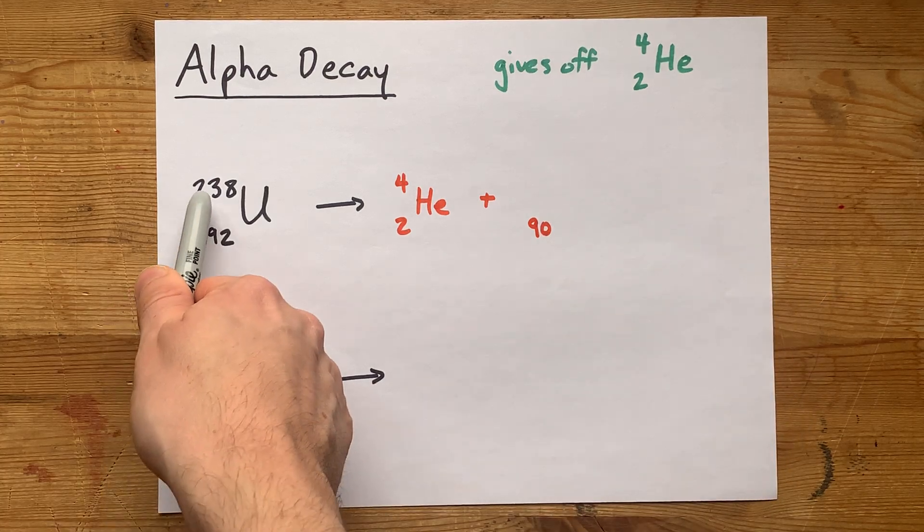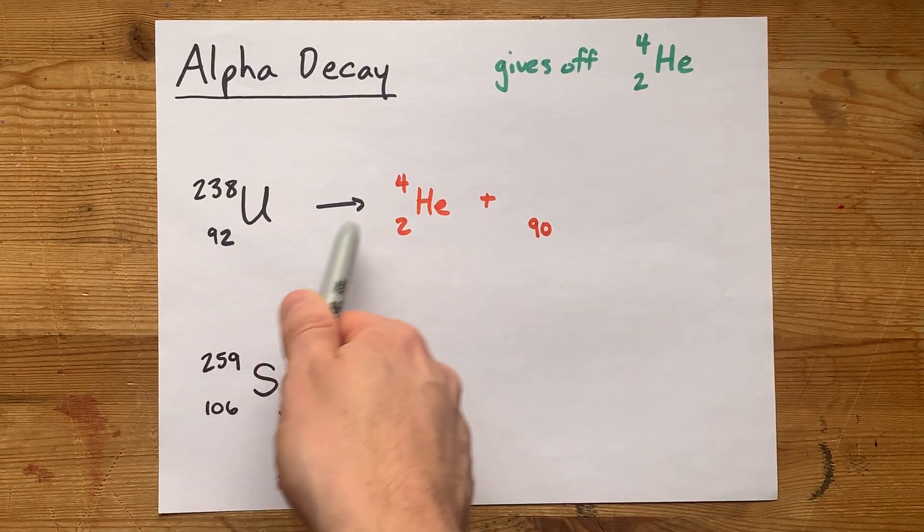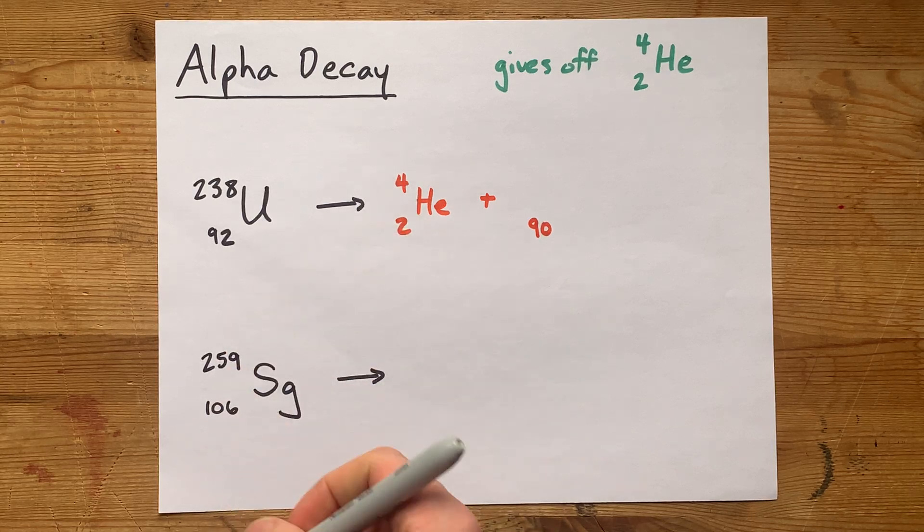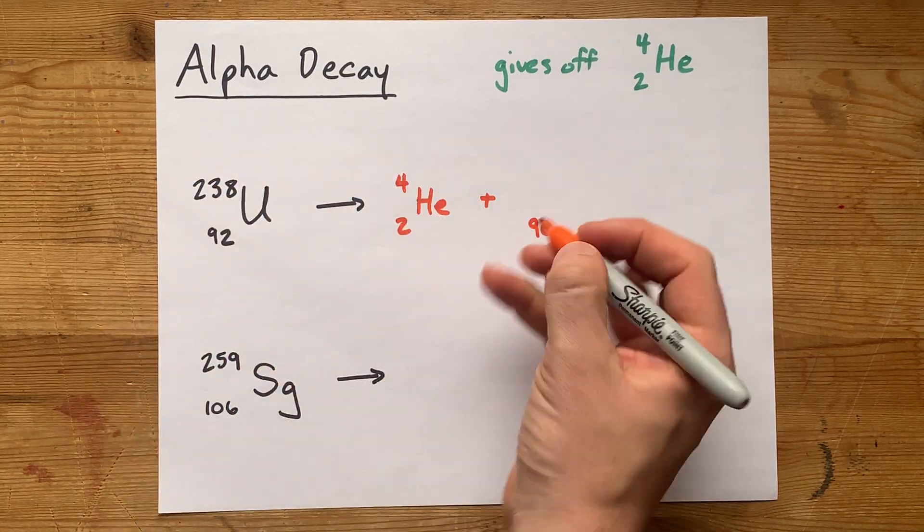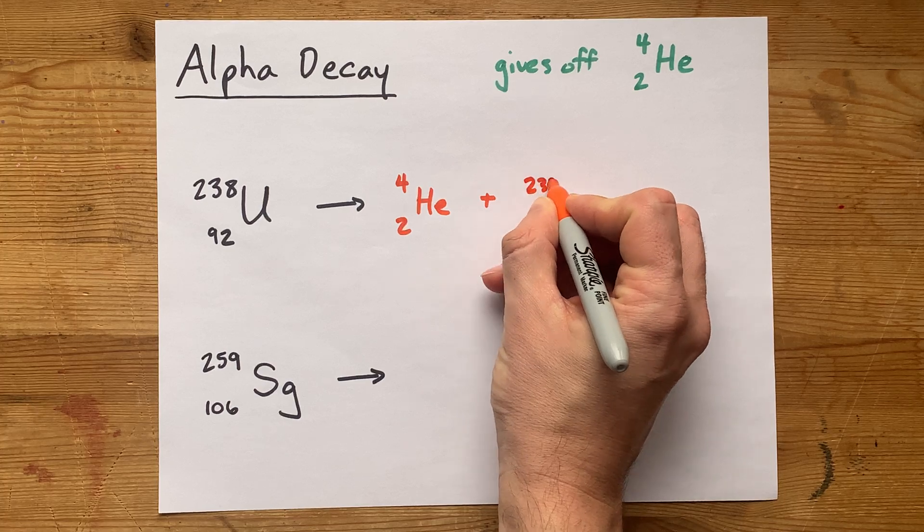Now you start with a mass of 238, and you're losing four atomic mass units off of that. 238 minus 4 is 234.